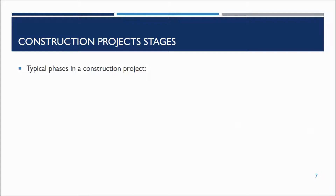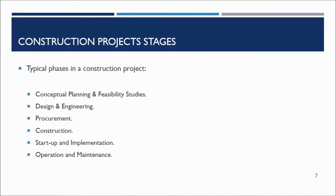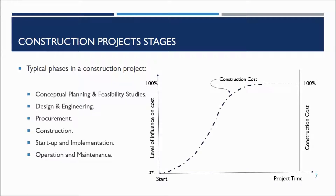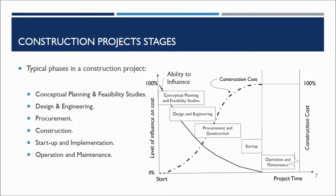Typical phases in construction projects are conceptual planning and feasibility studies, design and engineering, procurement, construction, startup and implementation, and operation. On the x-axis, the project time is presented, and the level of influence on cost is presented on the y-axis. The graph shows that the construction cost increases over time, and the ability to modify decreases through the mentioned project phases.